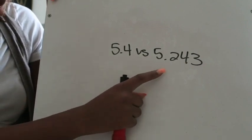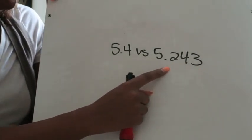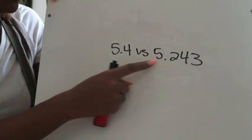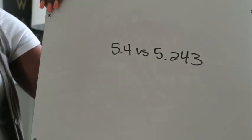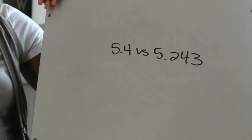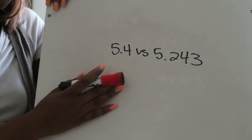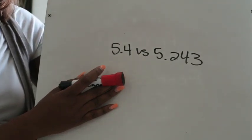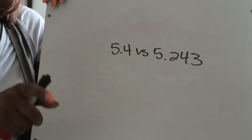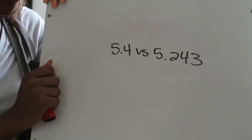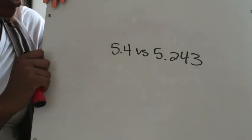The second mistake is students will look and say well this one has more digits, this decimal has more digits than that one, so therefore this one must be the greater value. That's also incorrect. It's not going to be the number of digits in a decimal that determines whether it's greater than another one. What is going to matter is the value of the digits in those decimal places.